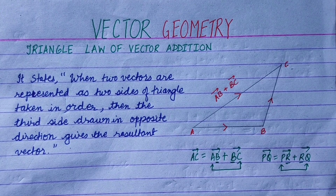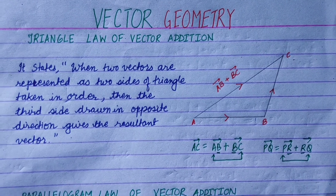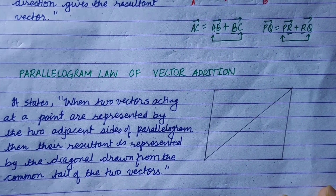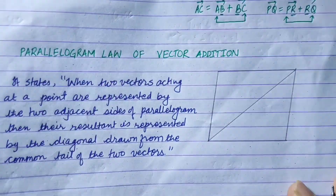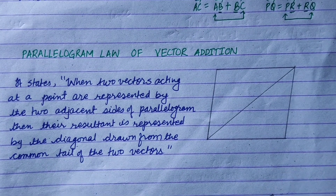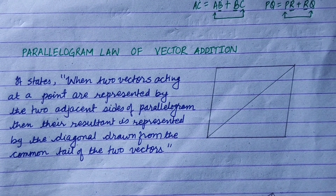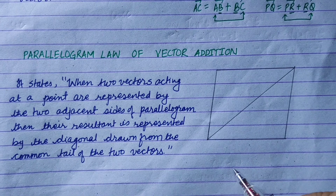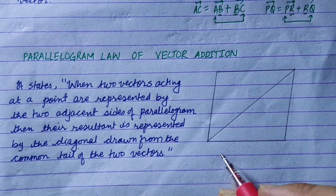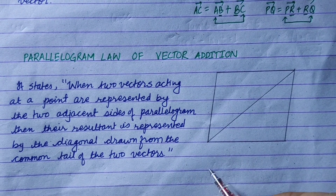This is the triangle law of vector addition. Now, the modified form is the parallelogram law of vector addition. In this case, we will start from a common point of the vectors.